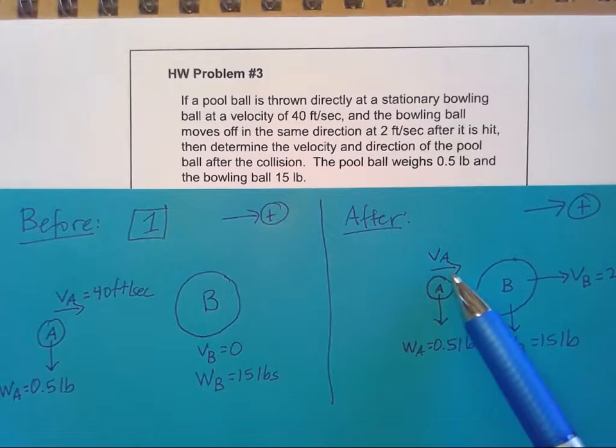When you're setting it up for your unknown, just make your unknown positive in your drawing. And then when you solve for it, if it comes out to be negative, well, then you know it's opposite to the way you drew it. So that's kind of an easy way to picture it and then to translate that into a calculation. I've got my drawings here, I've got all my information. I'm going to put it into an equation.